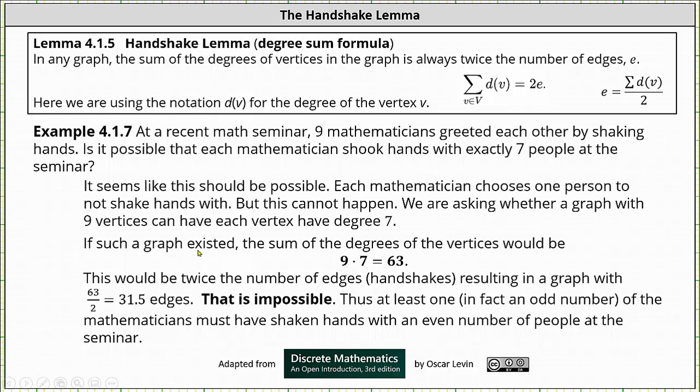If such a graph existed, then the sum of the degrees of the vertices would have to be 9 times 7, which is equal to 63.